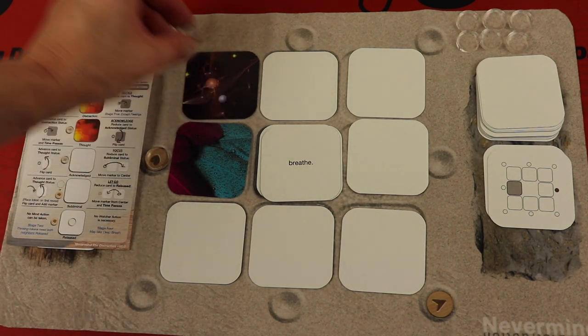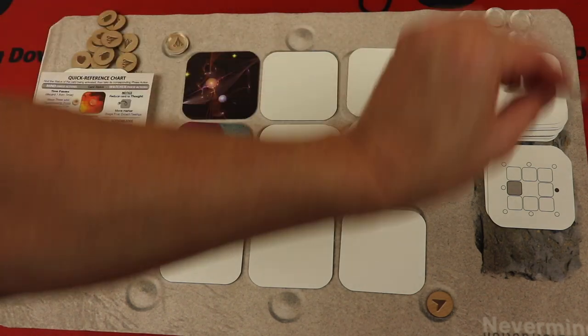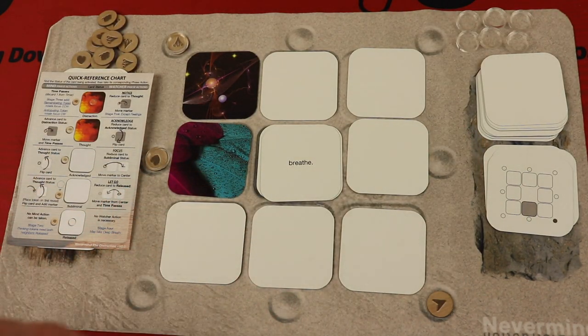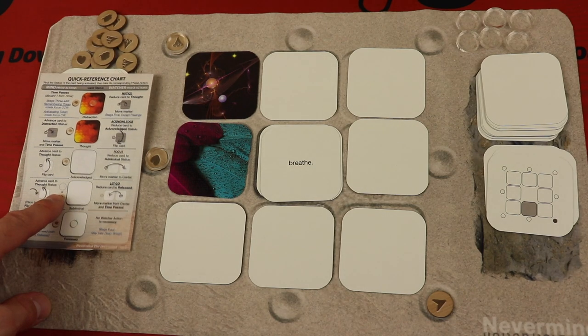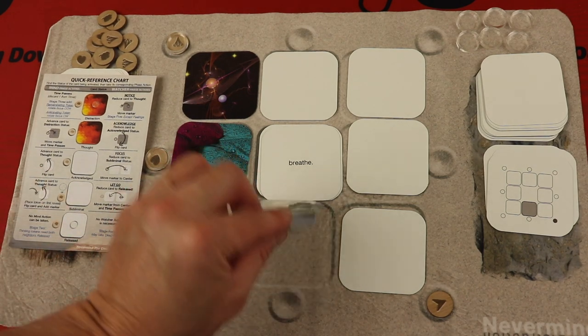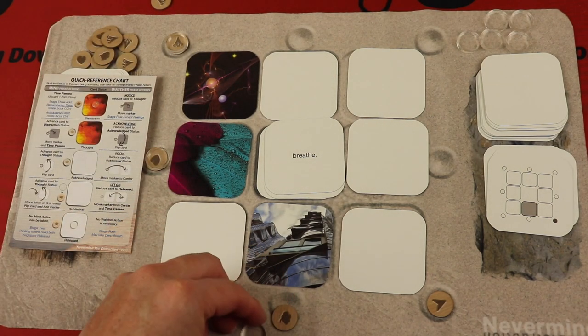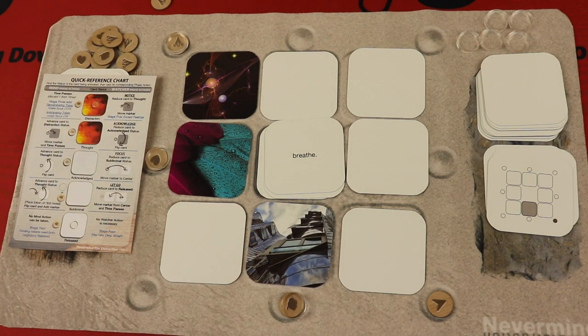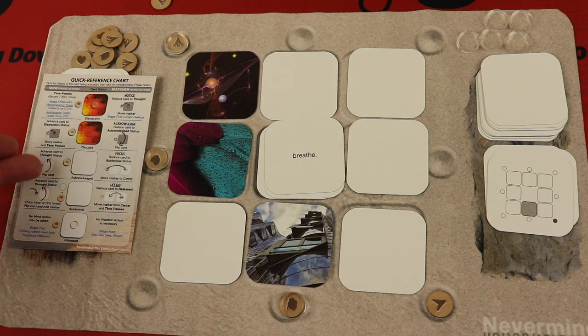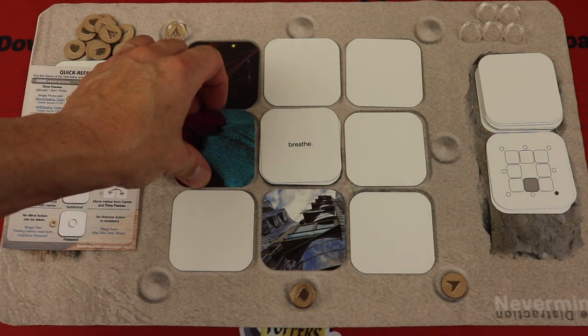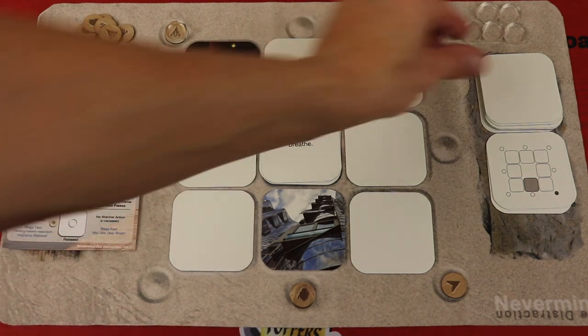So now maybe we remove this one to a thought, and then the mind goes like this. And the mind is going to do this one again. Right now it is like this, so they're going to flip it and it's going to get a marker and a token. Because now it has gone from subliminal to acknowledged. So maybe we move this from a thought to acknowledged, and then we see what the mind does.